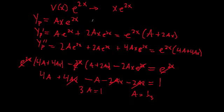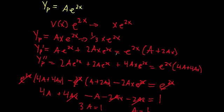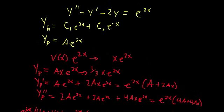This means a particular solution is (1/3)·x·e^{2x}. More importantly, this shows that the general form x·e^{2x} — modifying by multiplying by x — is valid. This is indeed a solution to this differential equation.